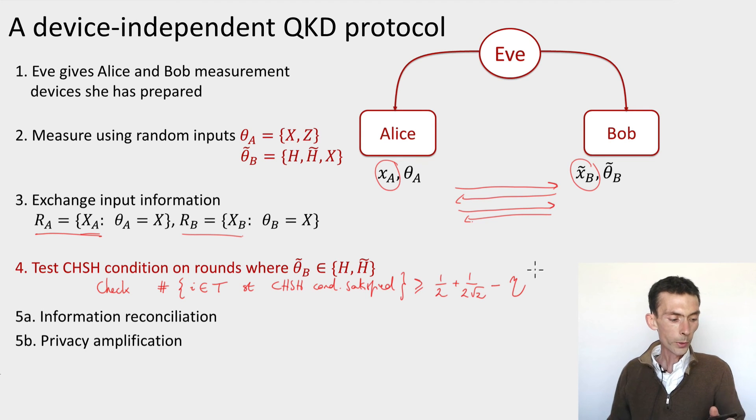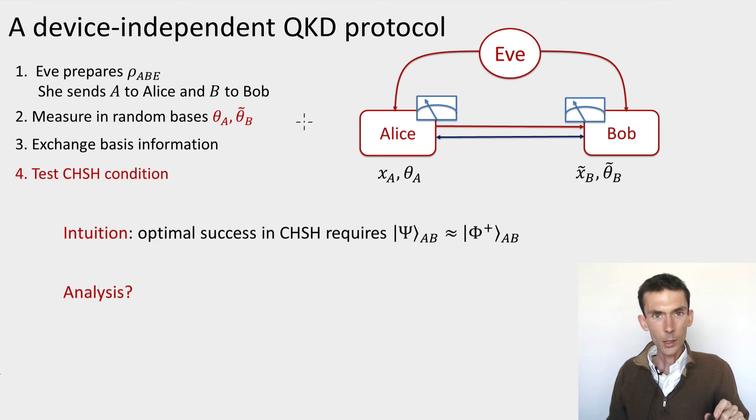Now Alice and Bob each look at their raw key bits and then they do exactly the same as they did in the BB84 protocol, which is perform information reconciliation and privacy amplification as before. So that's our device-independent QKD protocol. And now the question is whether this protocol is secure or not.